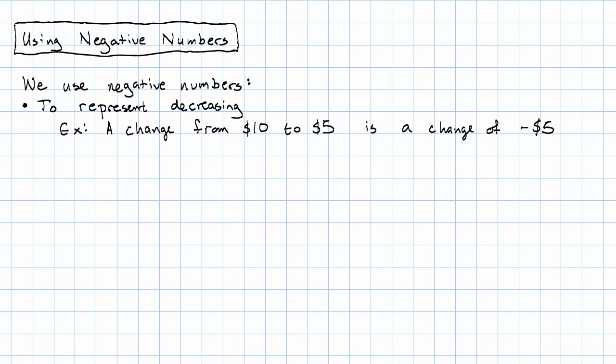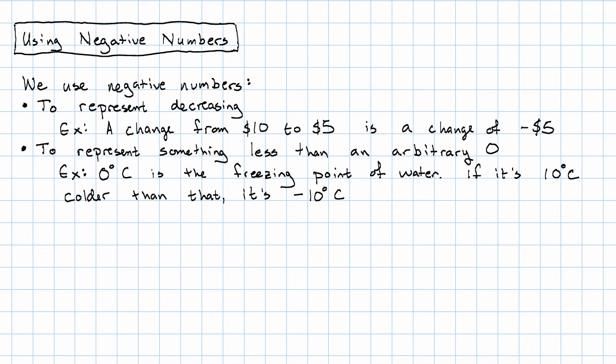Sometimes in a measurement the place that we say is zero is kind of arbitrary, and so we say that anything less than that is negative. For example, in the Celsius scale, zero degrees Celsius is defined to be the freezing point of water. If it's ten degrees Celsius colder than that, then the temperature is negative ten degrees Celsius, because the temperature is even less than the temperature that we picked to be zero.